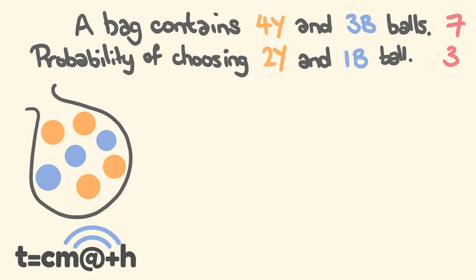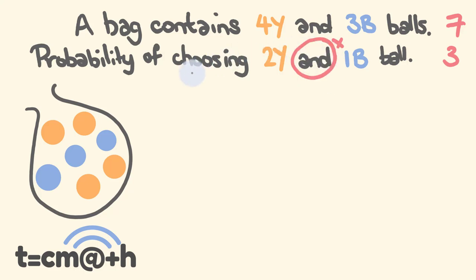Just a quick note: you're going to notice that we have an 'and' in this question. This quite literally means we are going to be multiplying as we go along. If it's an 'or', what we're going to be doing is adding. This is a common rule with probability.